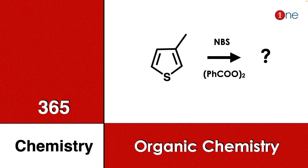Welcome to One Chemistry. This is the 365 Chemistry Series — organic chemistry questions for you. Here you have thiophene with a side chain methyl group, and we are reacting it with NBS (N-bromosuccinimide) and peroxide. You have to find what the final product will be.